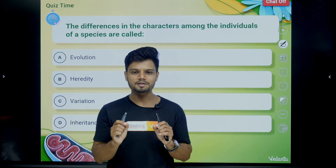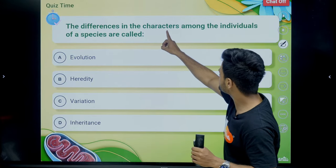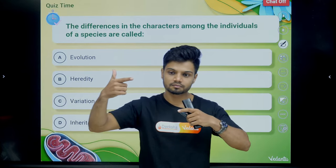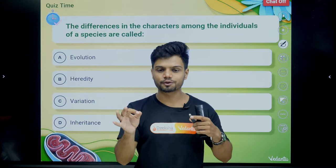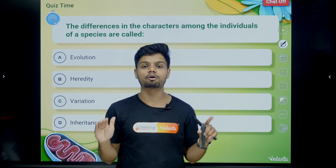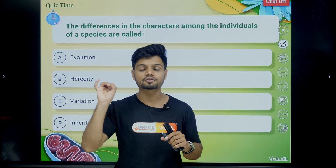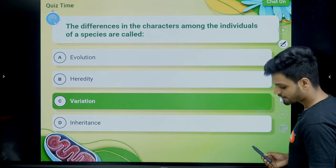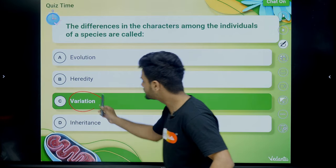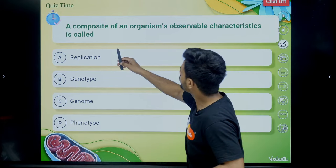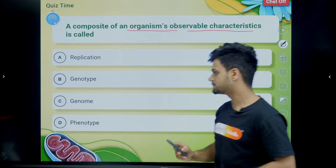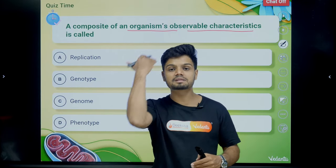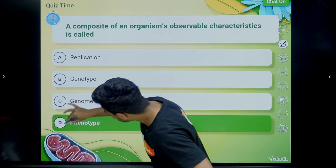Let's solve some questions. The difference in characters among the individuals of a species is called variation. The composite of an organism's observable characters is called phenotype. The observable characters of an organism — for example, I have two hands, two eyes, one nose, one mouth, two ears — these morphologically visible characters are called phenotype.